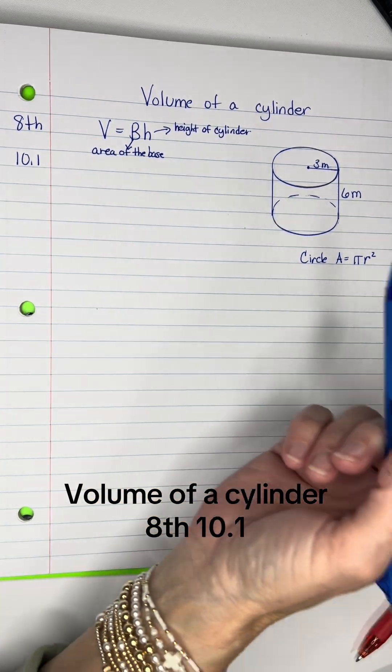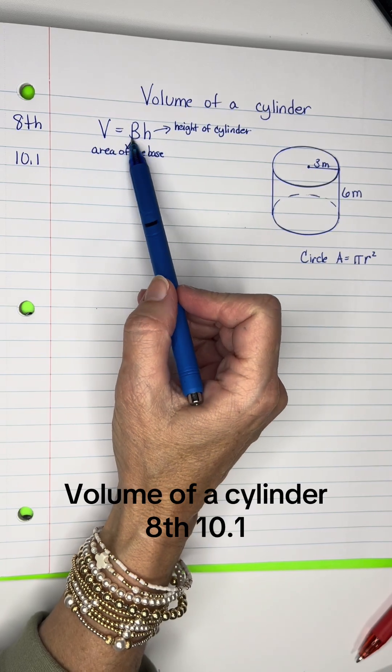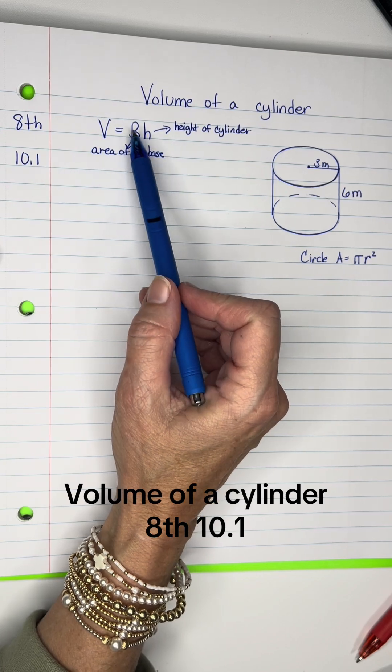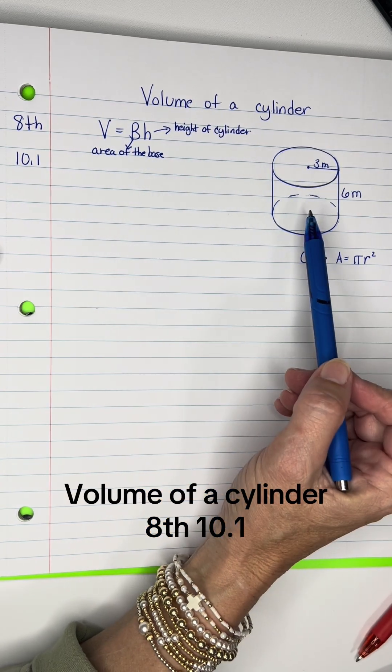Same formula: V equals base times height, and that capital B is talking about the area of the base. So that B will change depending on what your base of your shape is.